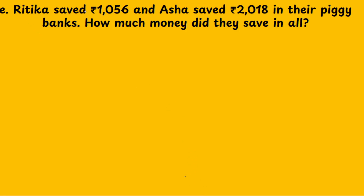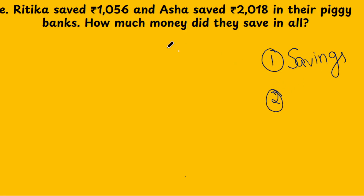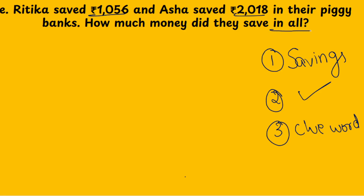Next sum: Rithika saved 1056 and Asha saved 2018 in the piggy bank. How much money did they save in all? First step: analyze the story — it is about savings. Second step: underline the numbers. Third step: the clue word is 'in all,' which means addition.